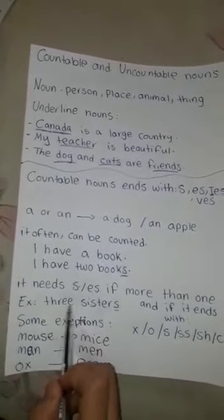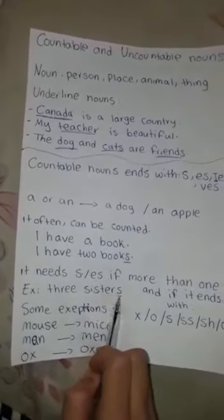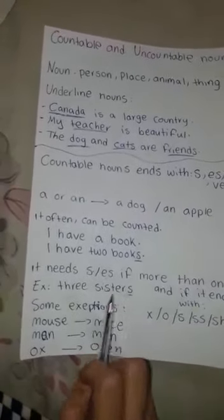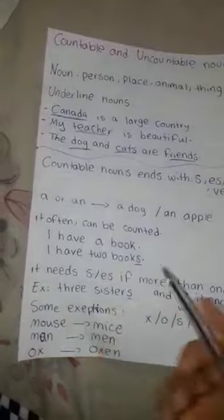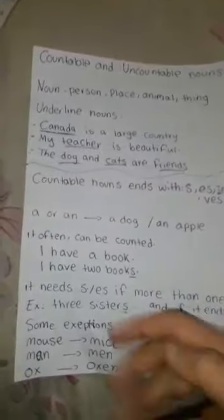For example, three sisters — any noun, we add -s at the end if we want it to be plural. We add -es if there is more than one and the word requires it.